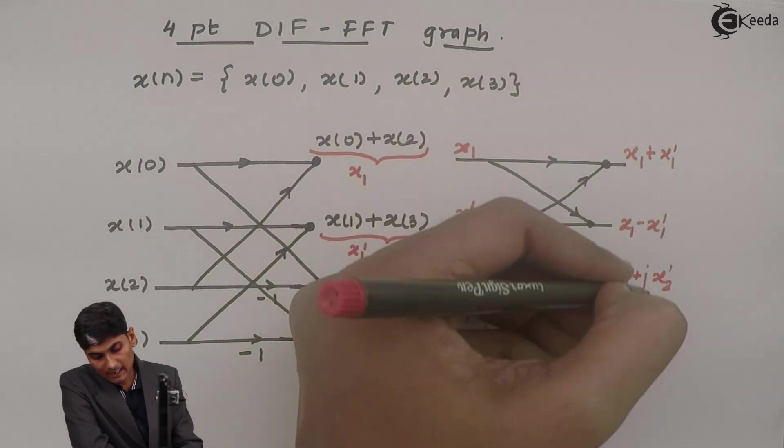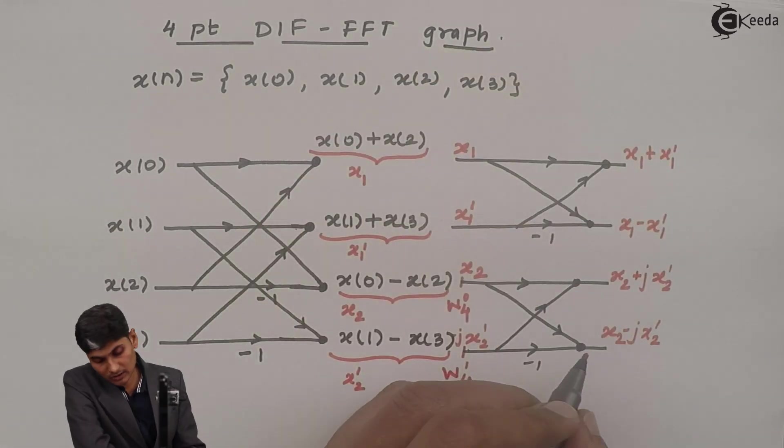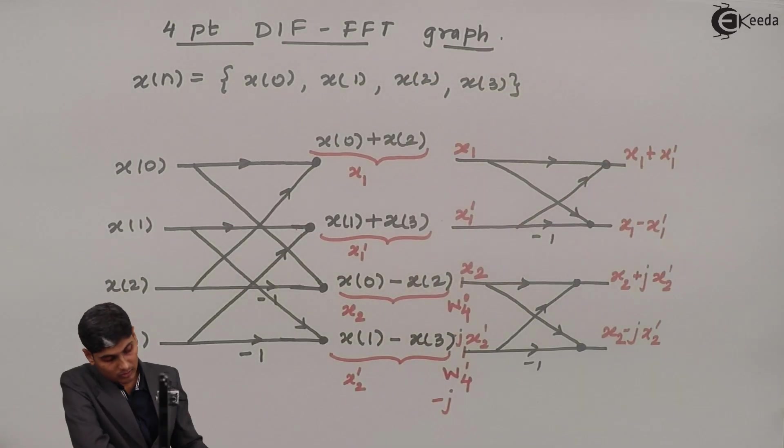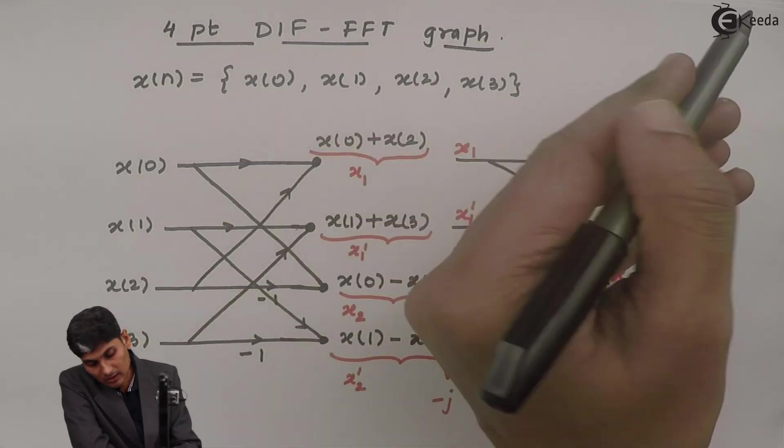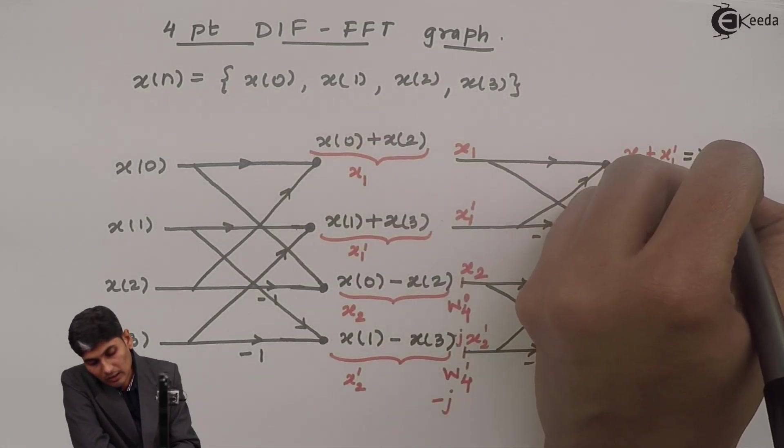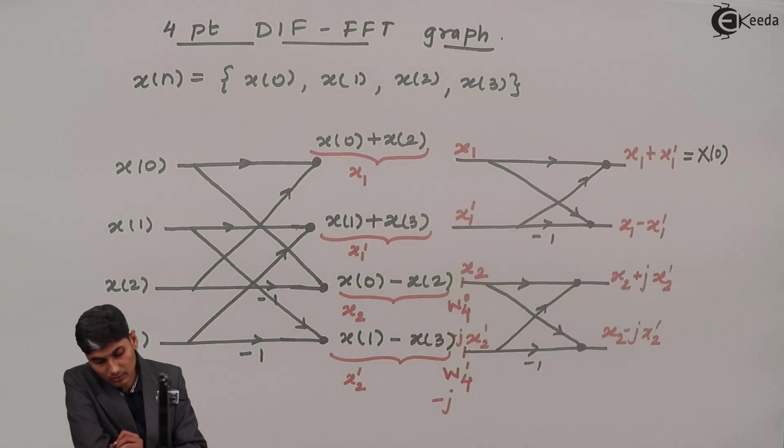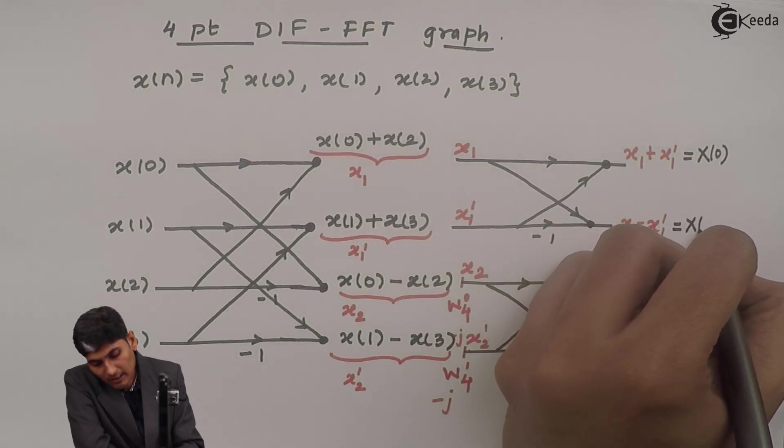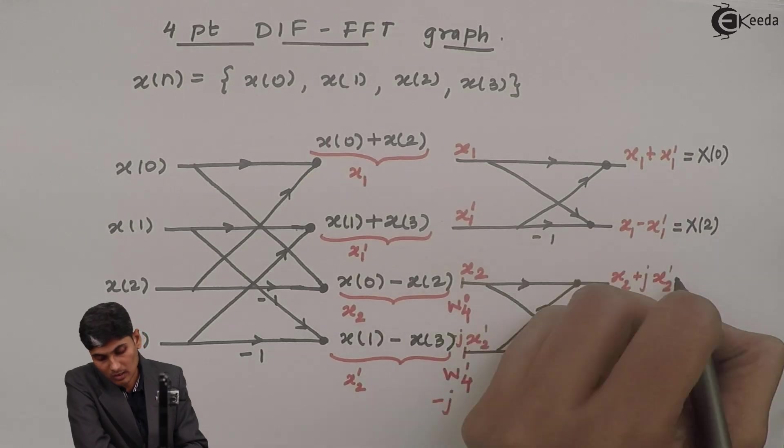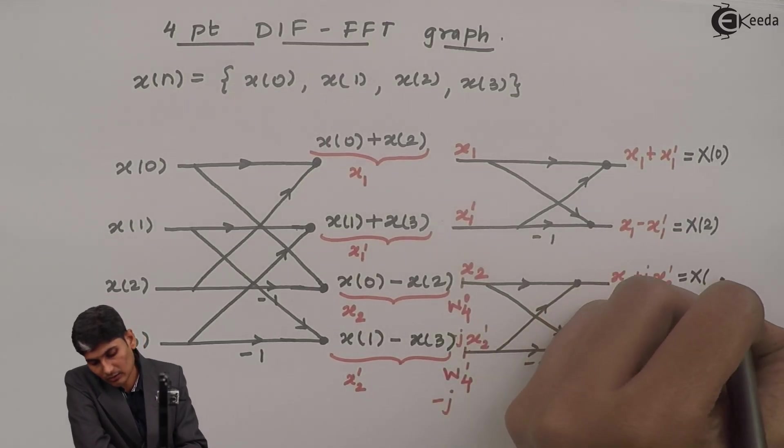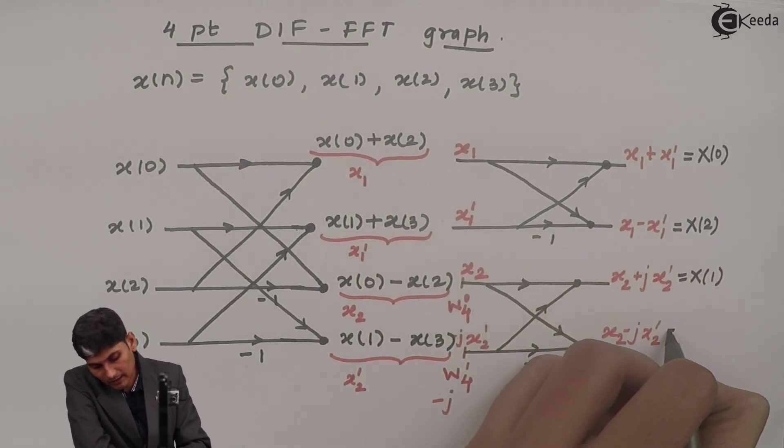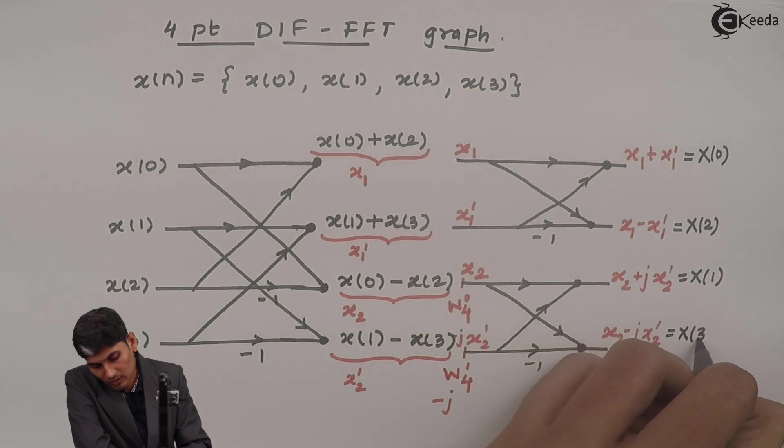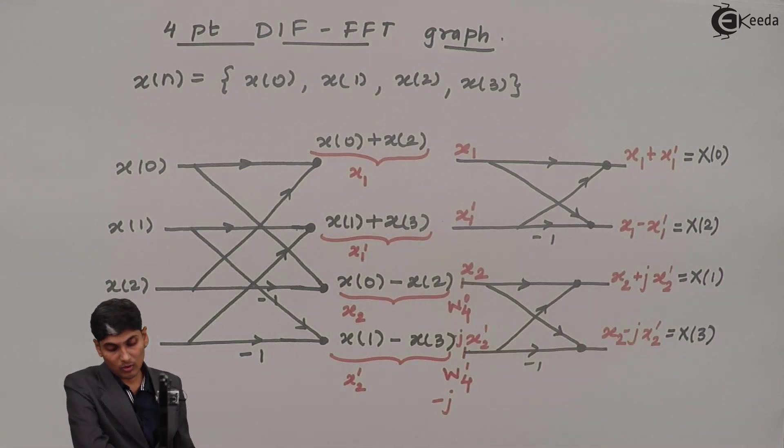Now, the samples that is placed over here is equal to, this is nothing but, equal to capital X of 0. Whereas this is capital X of 2. This is capital X of 1 and this is capital X of 3.